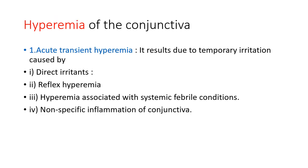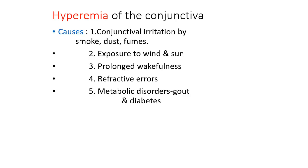Acute transient hyperemia results from temporary irritation caused by direct irritants, reflex hyperemia, hyperemia associated with systemic febrile conditions, and non-specific inflammation of the conjunctiva. Direct irritants include foreign body, misdirected cilia, exposure to wind and sun, prolonged wakefulness, refractive errors, metabolic disorders, smoke, dust, fumes, stormy wind, bright light, extreme cold, extreme heat, and simple rubbing of eyes.